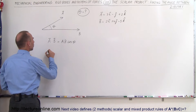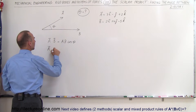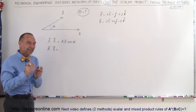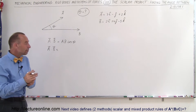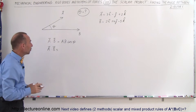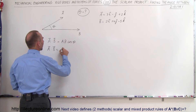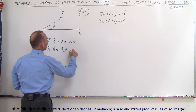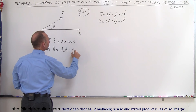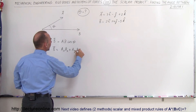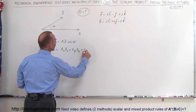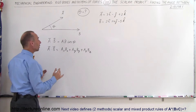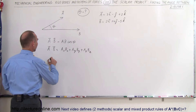We also know that the scalar product between vectors A and B is equal to the product of the X components, the Y components, and the Z components added together. In other words: A sub X times B sub X, plus A sub Y times B sub Y, plus A sub Z times B sub Z.